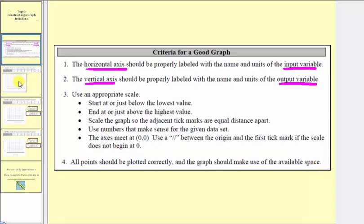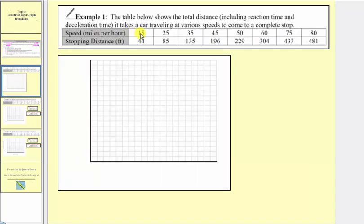Let's look at our example. The table below shows the total distance it takes a car traveling at various speeds to come to a complete stop. So this first row we have the speed in miles per hour and the second row is stopping distance in feet. So the first step and probably the most important step was to determine which variable is the input variable and which variable is the output variable.